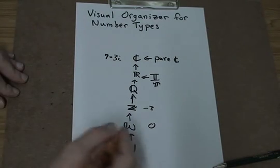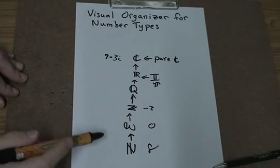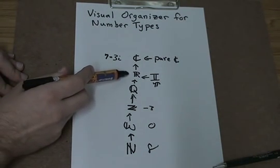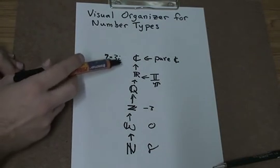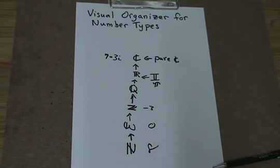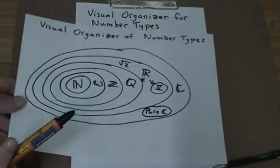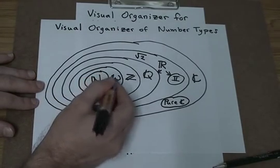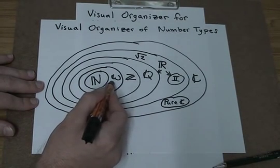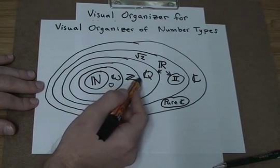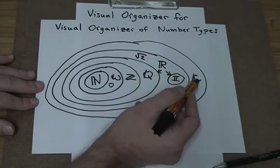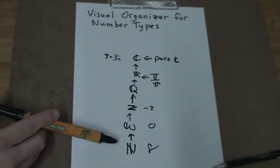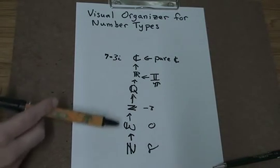For the number eight, it is a natural number, a whole number, an integer, a rational number, a real number, and a complex number. Similarly, for zero as a whole number, it is inside whole numbers, integers, rational numbers, real numbers, and complex numbers. So visual organizers can be used to help us better understand the types of numbers and how they are parts of other number sets.